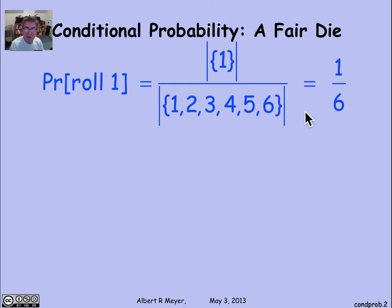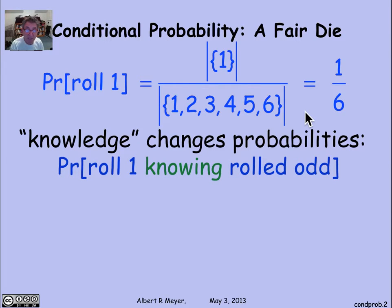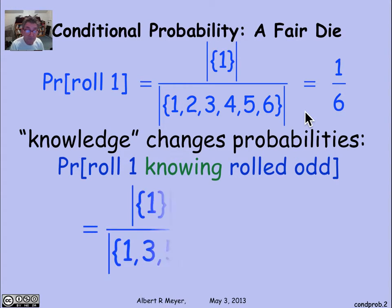But suppose I give you some additional information. Knowledge about the roll can change the judgment of probabilities. Suppose that I tell you that I rolled an odd number. And now I want to know what's the probability that I rolled a 1. And the answer will now be that given that it's an odd number, the only possibilities are 1, 3, and 5. And so the probability has changed to 1 third.